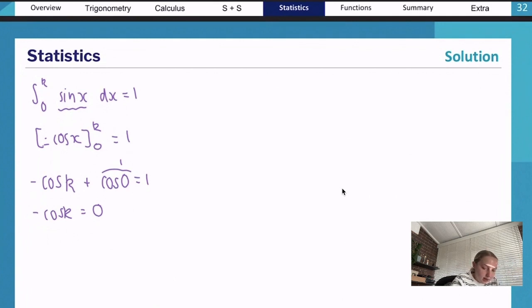So then our cos of k, if we take that across, we're going to get pi on two. So that's all we need to do to get those marks.